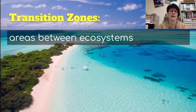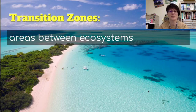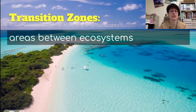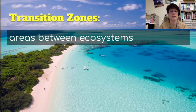As you go from one ecosystem to another, there is often a transition zone — areas between ecosystems that are sometimes gradual and sometimes not. You can see here we have the ocean, which is a saltwater ecosystem, then the beach, and then we get into more trees. A lot of wetlands also act as transition zones between different ecosystems, and you will find different organisms living in each of these areas.